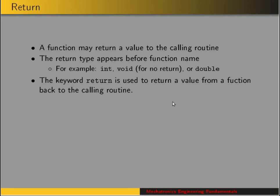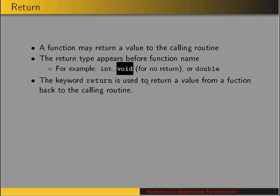Functions sometimes return a value to the calling routine. If we have a function that calculates the area of a square, it would return that area — we might pass it the length and width as arguments, and then it returns a value to the calling routine. Whenever we declare a function, we specify what data type it returns: it could return an int, or void if there's no return — like printf doesn't return anything, it just writes to the screen — or it could return a double.